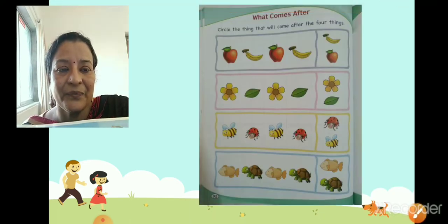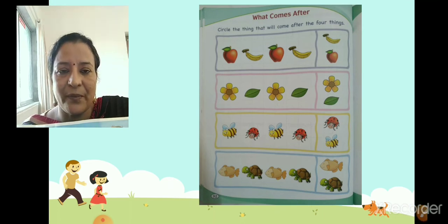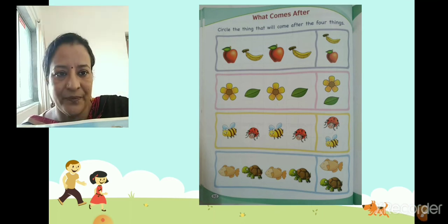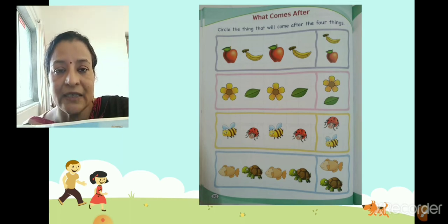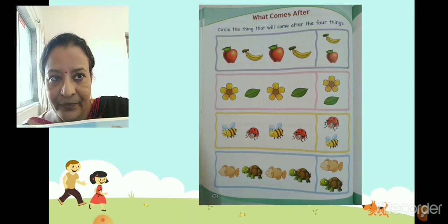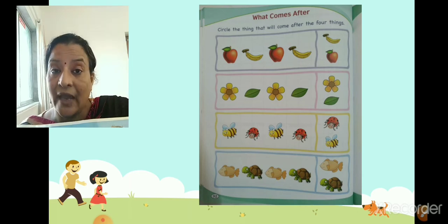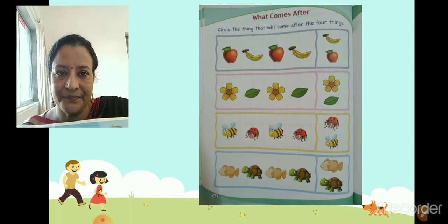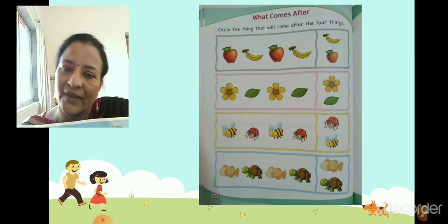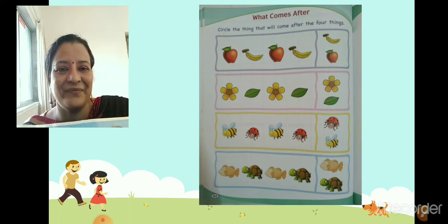Now, we will do 2 pages from your maths textbook. So remove your maths textbook, your numbers book. Page number 92. 9, 2, 92. Write today's date. Write CW. And read the heading. What comes after? Ready with your pencil and book. Shall we start? My very good children.